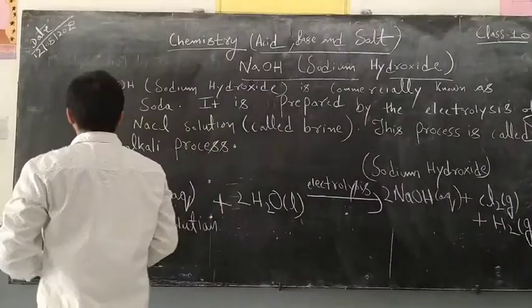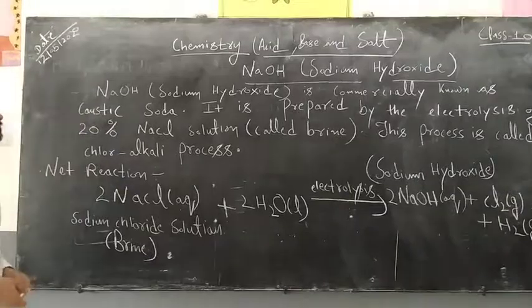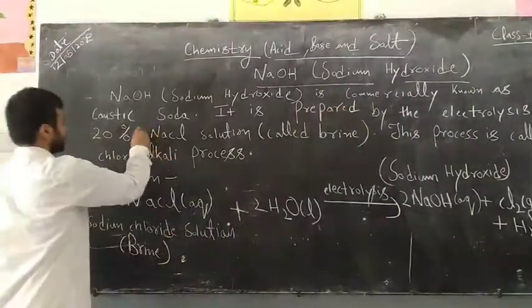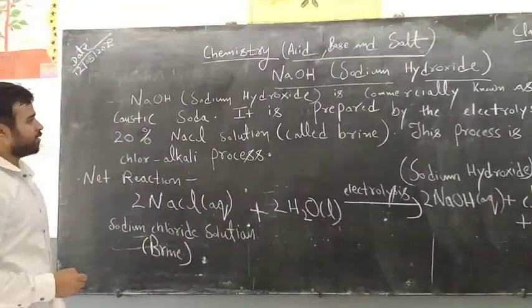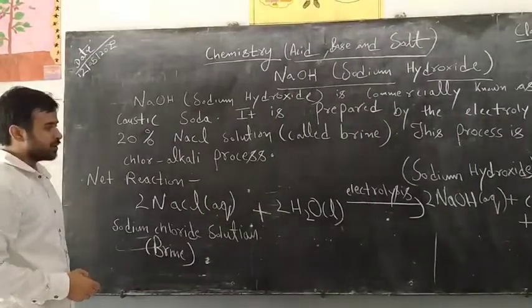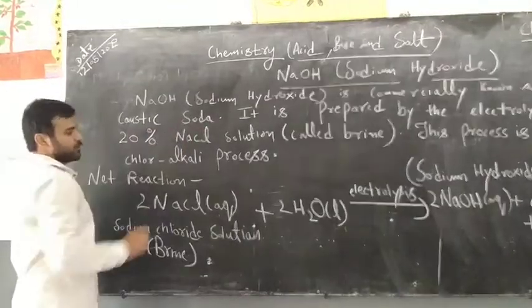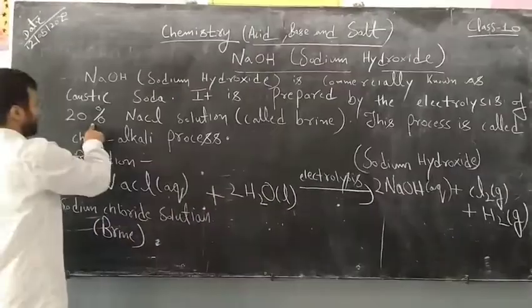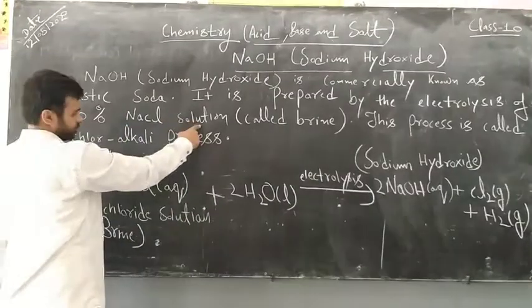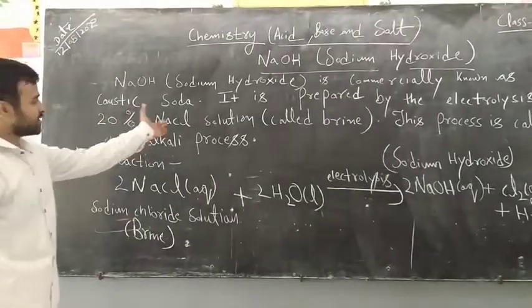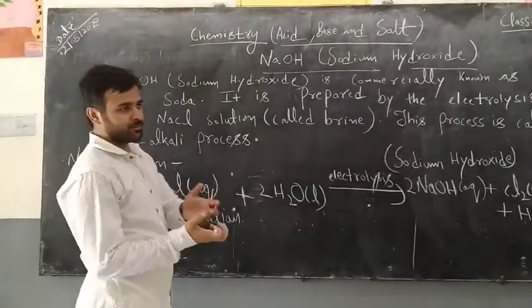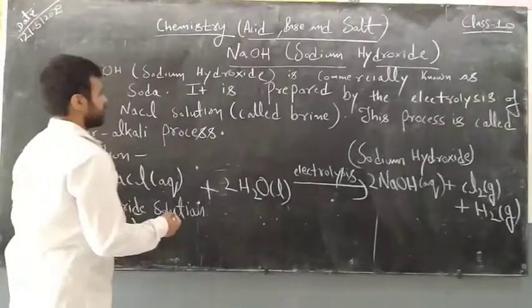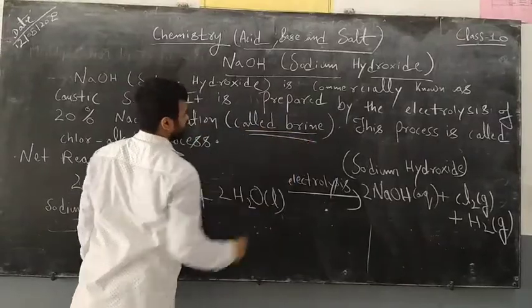Let's see how to prepare sodium hydroxide. Sodium hydroxide is commercially known as caustic soda. It is prepared by the electrolysis of 20% NaCl solution, which is called brine.